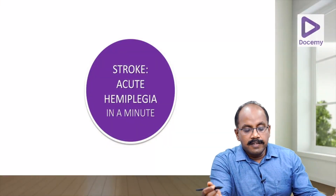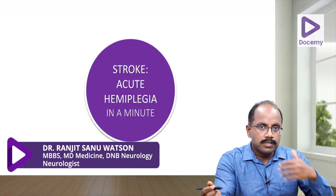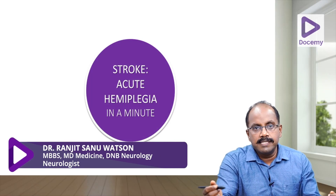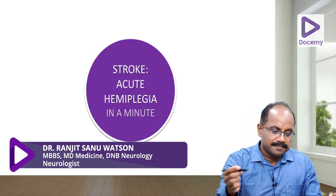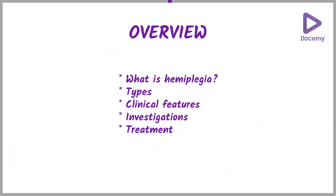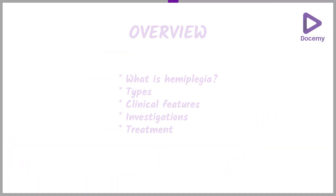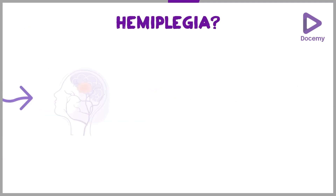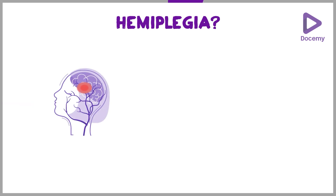Dear students, we will glance through the topic of stroke and hemiplegia. What is hemiplegia? Weakness of one side of the body is called hemiplegia. It is a very common neurological deficit.